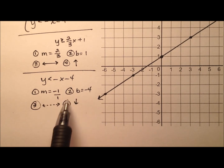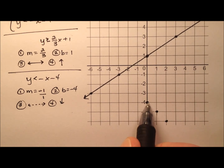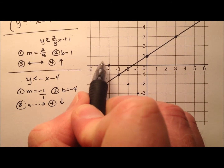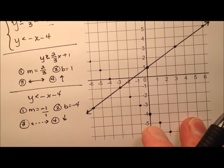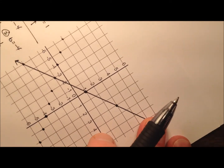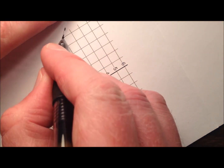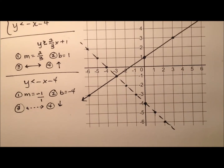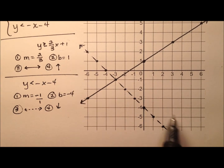Using this information, let's go ahead and graph this. We're going to start at negative 4, and our slope is negative 1, so negative 1 over 1, or up 1 and back 1. So let me grab my straight edge and draw a dashed line. So I drew my line past the boundaries of the graph, and I'm going to put arrows on it.